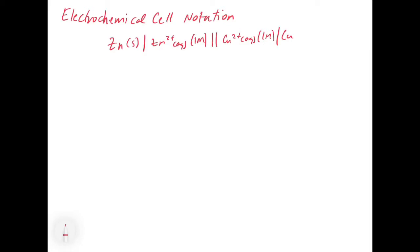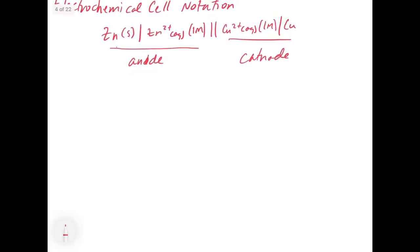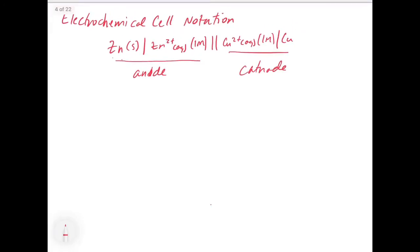Let's start to dissect this. On the left side we have the anode, and on the right we have the cathode. You'll notice that the electrodes are on the outside and the electrolytes are on the inside.